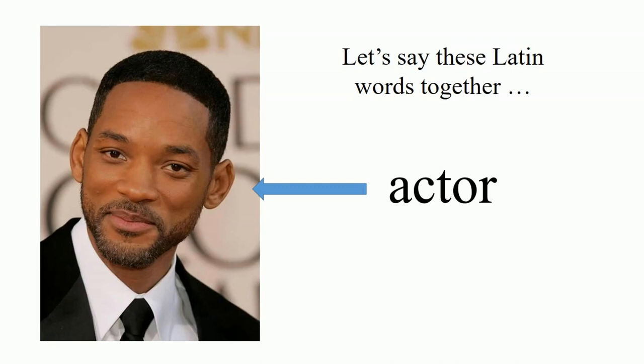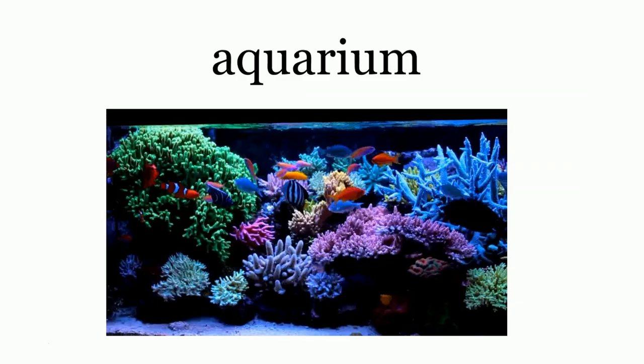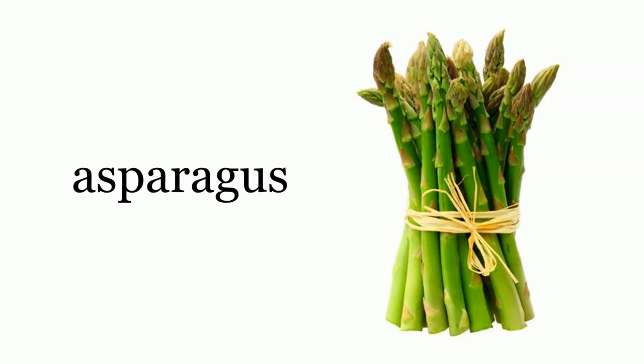Animal. Why is an animal an animal? Because an anima is a soul or a spirit. If something has an anima, it's animated. If something is inanimate, it doesn't have a soul — it's not alive. Aquarium — it's a place where there's a lot of aqua.